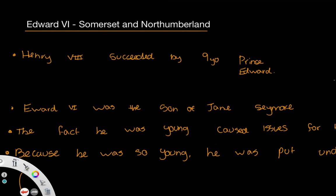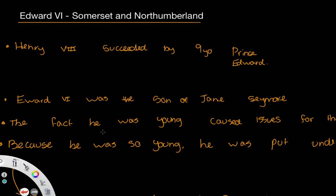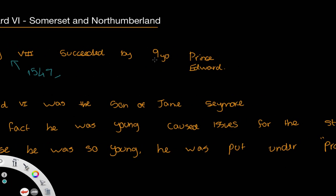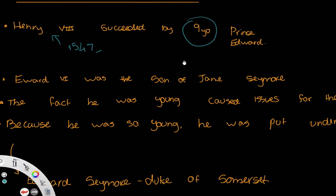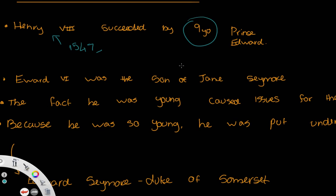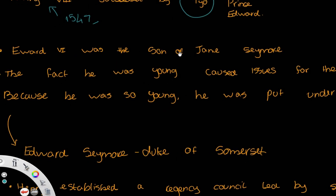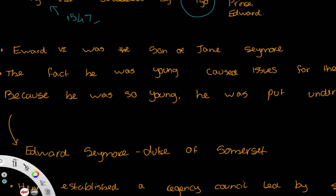In this video we have a little introduction to Edward VI, who succeeded his father Henry VIII in 1547. 1547 was when Henry died, and at this point the young prince was only 9 years old. This did cause some problems because of the fact he was so young — it was seen that he couldn't really rule England on his own due to his lack of responsibility being a 9 year old child.